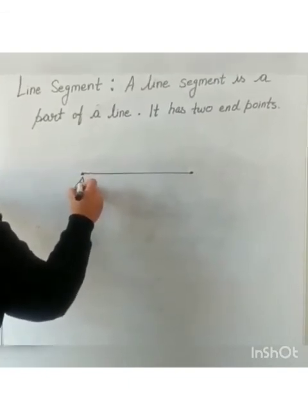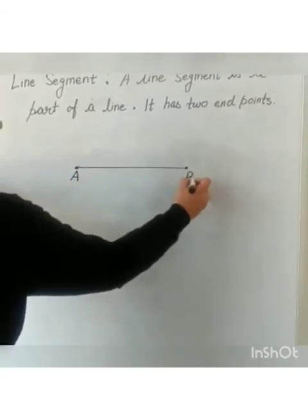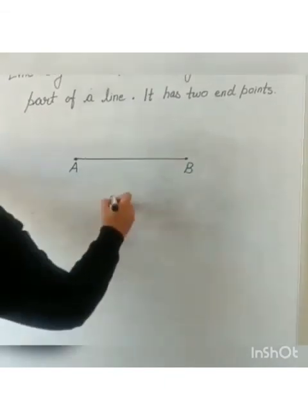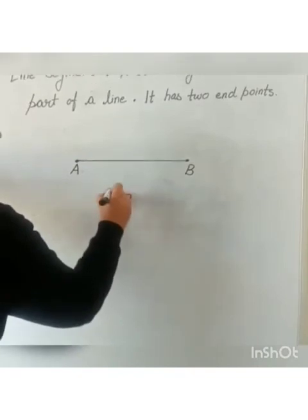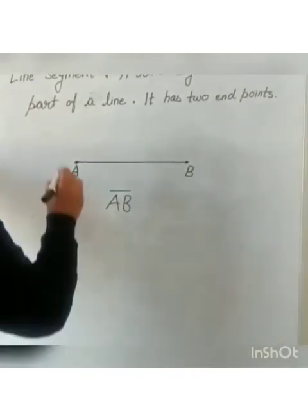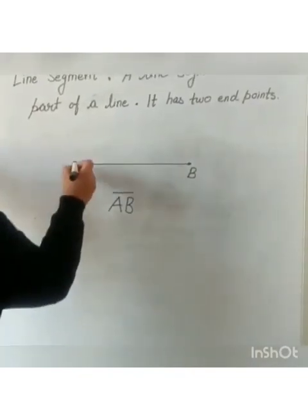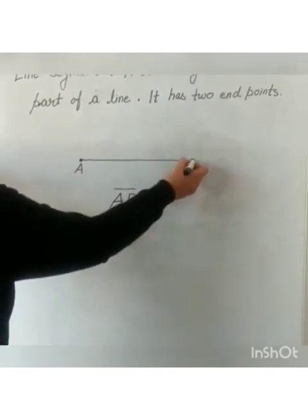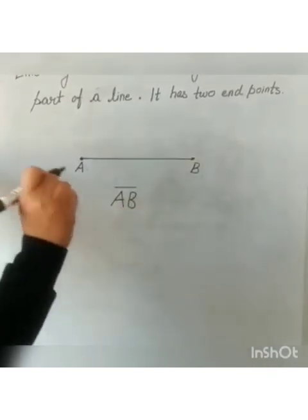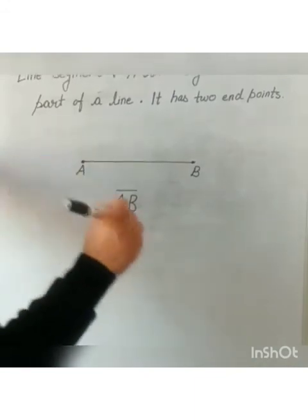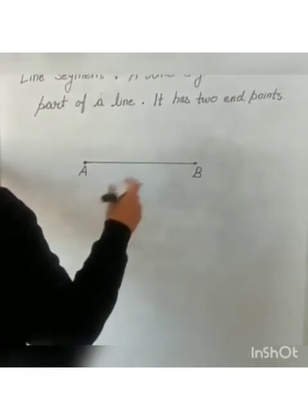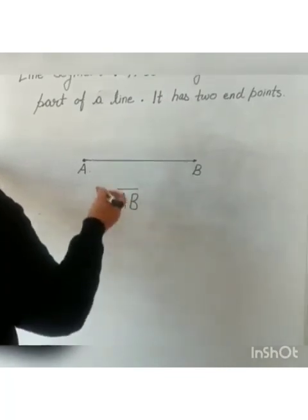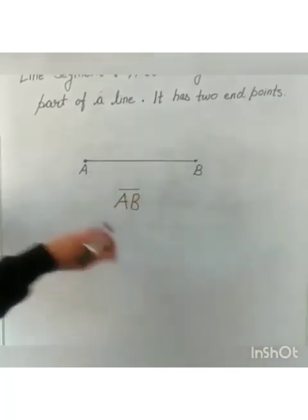So we will represent it as A, B. And when we represent line AB, we will put bar on it. It has two end points. One is on A and one is on B. The length between the two points is limited. It cannot be increased or decreased. So it is called line segment.